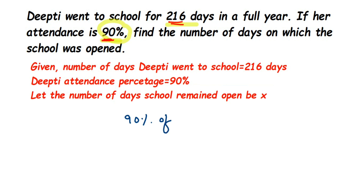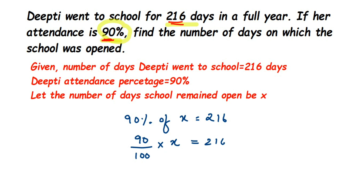So framing the equation: 90% of the total number of days the school was open, that is x, is equal to 216. We have to find the value of x. 90% means 90 out of 100 — percentage means per 100, so you remove the percentage sign and divide by 100. So it's 90 divided by 100, and 'of' means multiplication, then multiplied by x equals 216.